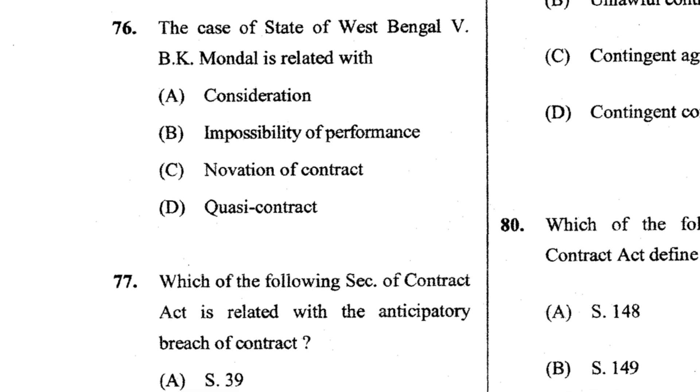Question 76: The case of State of West Bengal vs. B.K. Mondal is related to quasi-contract. D is the answer.